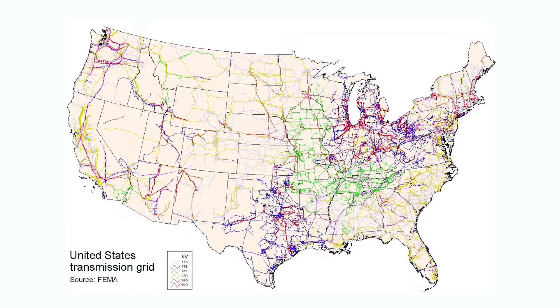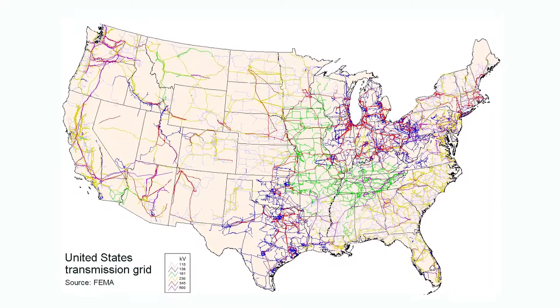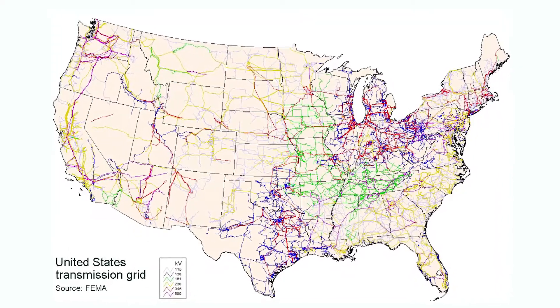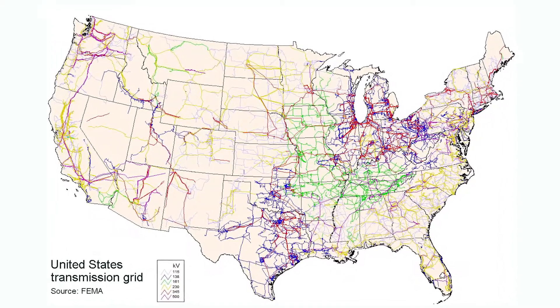For those of us here in the States, we have the luxury of having a very robust and reliable power grid. We have all of these power plants — whether it's solar or wind or coal or nuclear — and they all put power into the grid. The grid is this superhighway that allows that power to move around and be used by consumers.